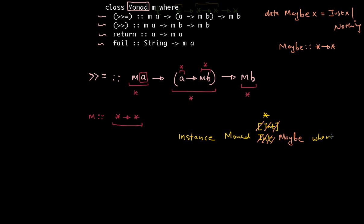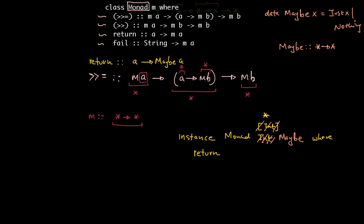And then I can complete the rest of my definition: 'instance Monad Maybe where'. And now I can make a transition to the value world and write the implementation of these methods. Let's take the simplest one first - let's look at the method return. So if I were to write the implementation of return, this is the type signature, but I'm just going to replace everywhere I see an M with a Maybe. So the type for return would be: it takes in some value of type A and gives you back as output something of type Maybe A.